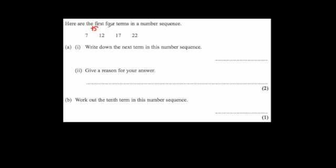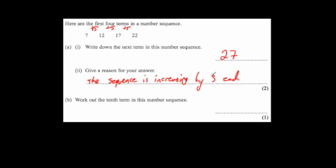From 12 to 17 you add 5, from 17 to 22 you add 5. So the rule is adding 5 each time. To write down the next number in the sequence, you add 5 to 22, which gives 27. The reason: the sequence is increasing by 5 each time, and 22 plus 5 equals 27.